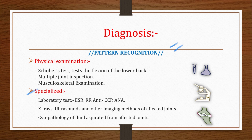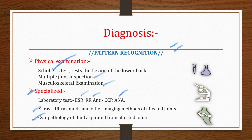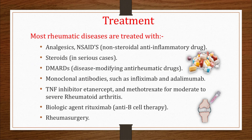Specialized physical examinations performed by a rheumatologist include Schober's test — especially for lumbar spine flexion movement in patients with ankylosing spondylitis — as well as multiple joint inspection and musculoskeletal examinations. Lab testing includes ESR, CRP, rheumatoid factor, anti-CCP, and ANA. Imaging includes X-rays, ultrasounds, and other methods for affected joints, as well as cytopathology of fluid aspirated from affected joints.